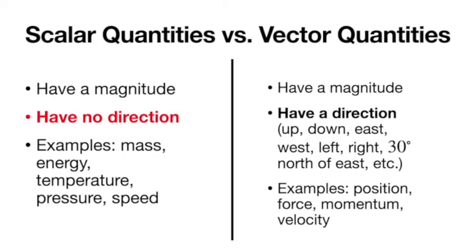There are things like speed which could have a direction, in which case it'd be a velocity. So if we do add a direction to something, we call that a vector quantity. It still has a magnitude — for velocity, maybe 3 meters per second. But it also has a direction, whether it's up, down, east, west, left, right, 30 degrees north of east, whatever it is.